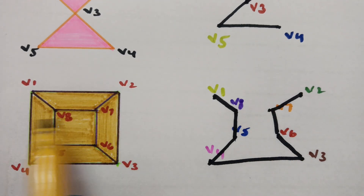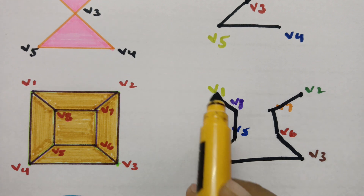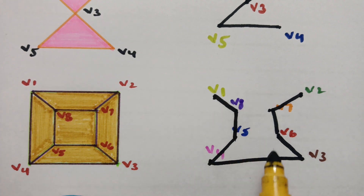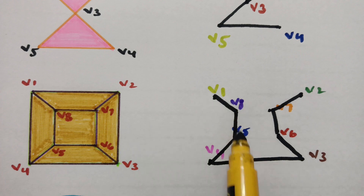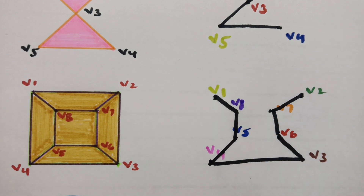I have to cover all the vertices — only vertices I am talking about — whereas in the Eulerian graph I cross each and every edge. Here I am crossing each and every vertex: 1, 2, 3, 4, 5, 6, 7, 8. All eight vertices are crossed only once.